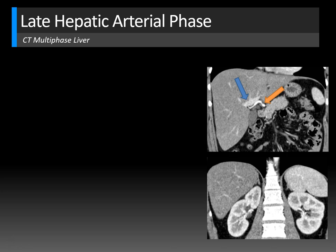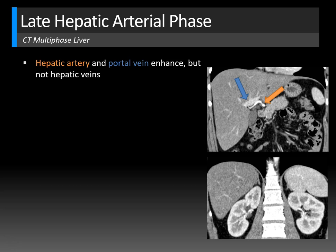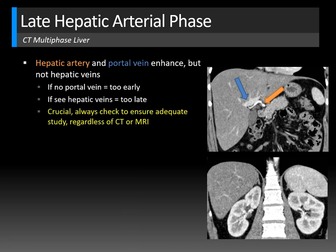On the late hepatic arterial phase, you should see the hepatic artery and portal vein enhance, but not the hepatic veins. If you only see the hepatic artery without portal vein enhancement, you've scanned too early. If you see the hepatic veins, you're too late. You should always check this on any multi-phase liver study — CT or MRI — to ensure an adequate late hepatic arterial phase. The normal order of enhancement is: hepatic artery, then portal vein, then hepatic veins.